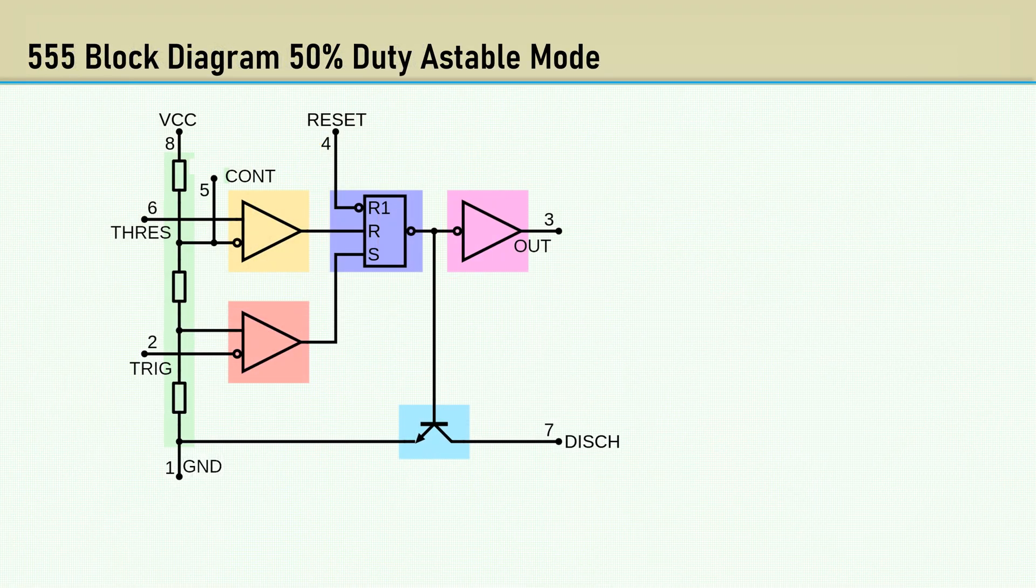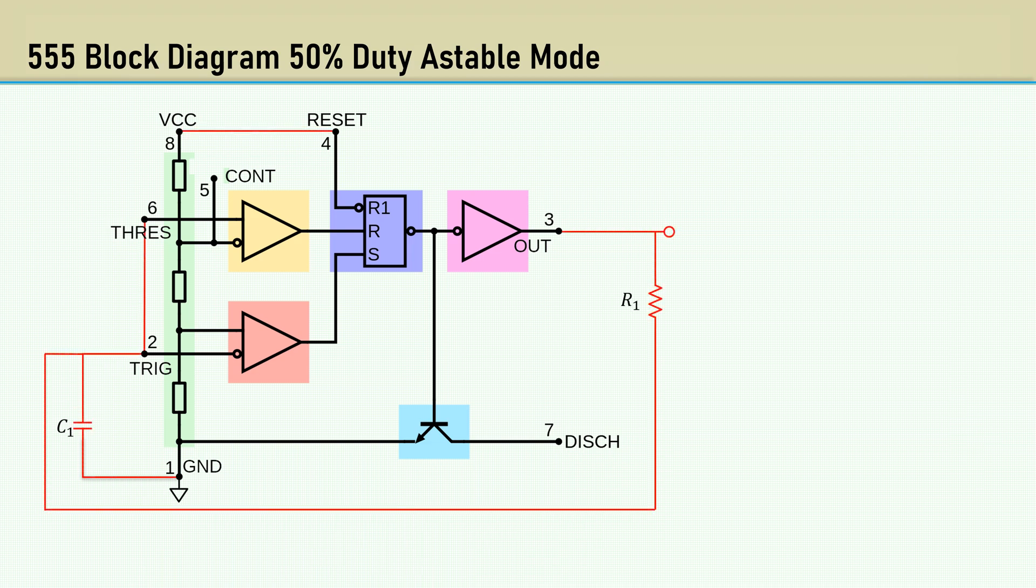To generate our square wave we will use a special configuration of the 555 timer chip. The 555 in its standard configuration cannot generate a 50% duty cycle square wave. The special configuration uses the output to charge and discharge the capacitor through a resistor as opposed to using the discharge pin. The threshold and trigger pins are tied together as with the normal 555 astable mode.